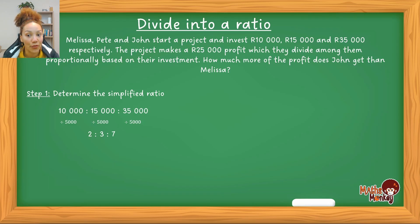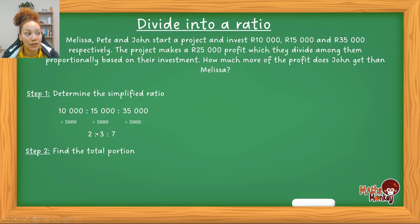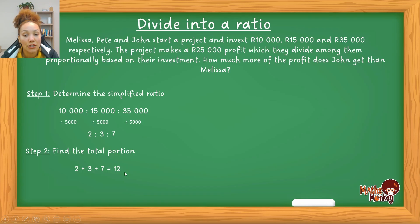Step 2 is to find the total portion. If Melissa contributes 2 portions, Pete 3 portions, and John 7 portions, together they contribute 12 portions in total. You find this by simply adding all the values in the simplified ratio together: 2 + 3 + 7 = 12.